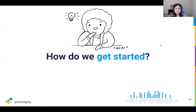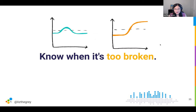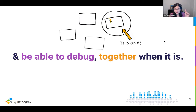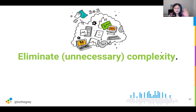So what are the key elements of a production excellence culture? These are the four lessons I learned from my time as a site reliability engineer. First, you have to know when your services are too broken. Second, you have to be able to debug — to understand why they're broken. Third, you have to be able to collaborate with other teams to repair the damage. And fourth, you need to eliminate unnecessary complexity and close the feedback loop to really address what's going on inside your system.